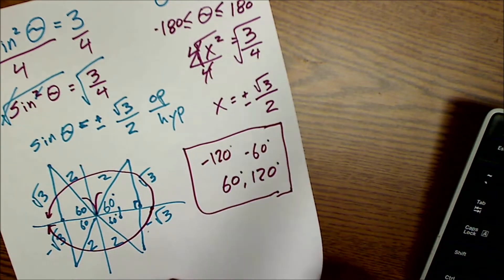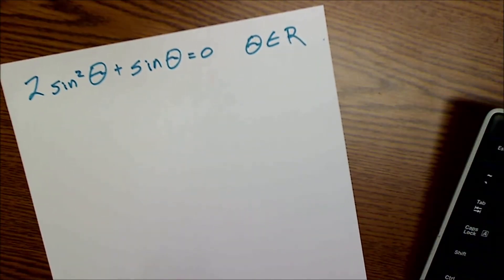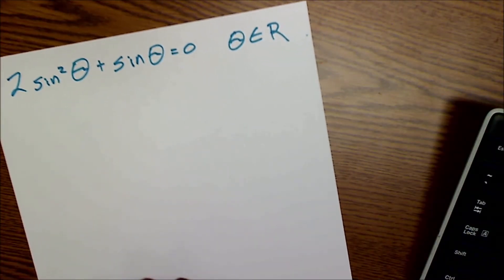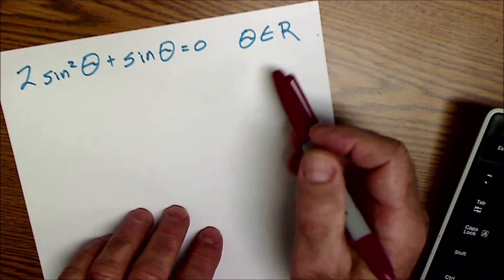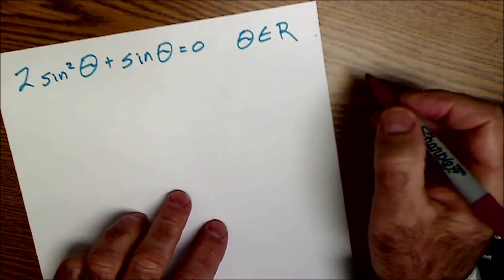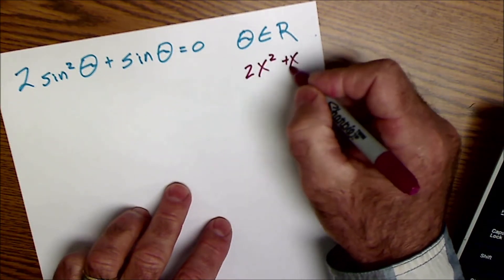All right, moving on to the next problem. This problem right here, 2 sine squared of theta plus sine of theta equals 0. With the domain, theta is an element of all real numbers. Kind of the algebra equivalent of this is 2x squared plus x equals 0.